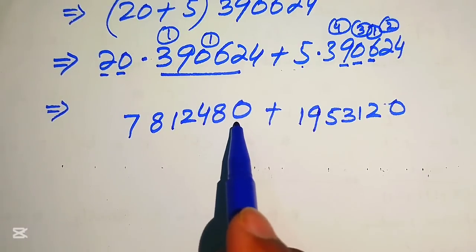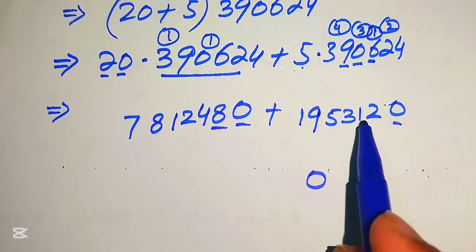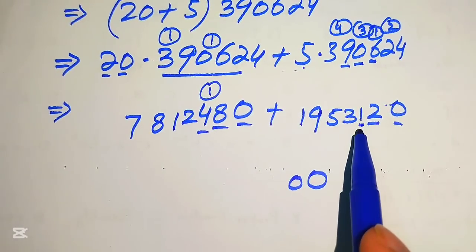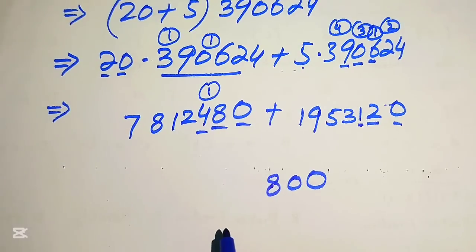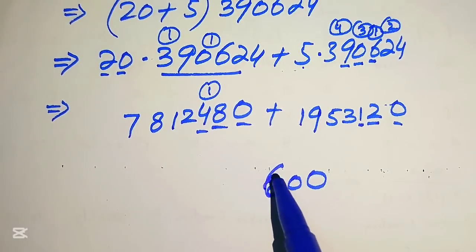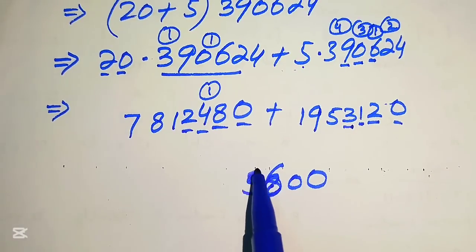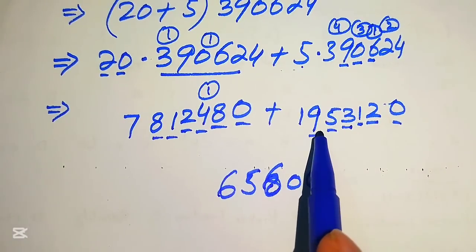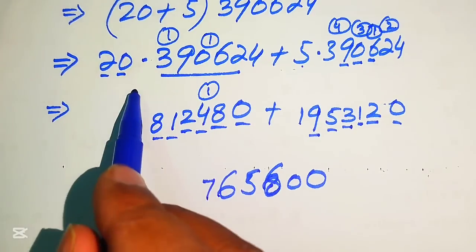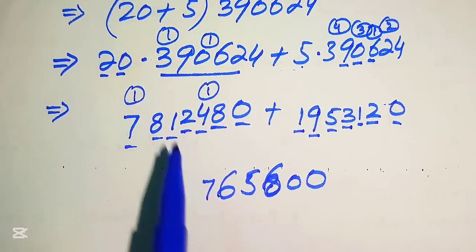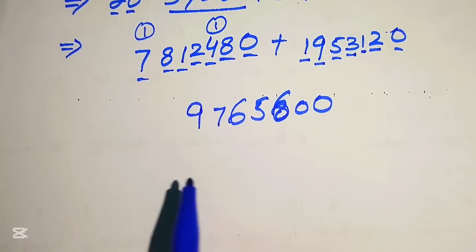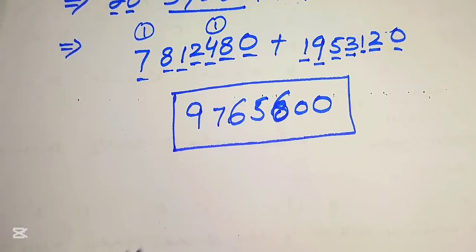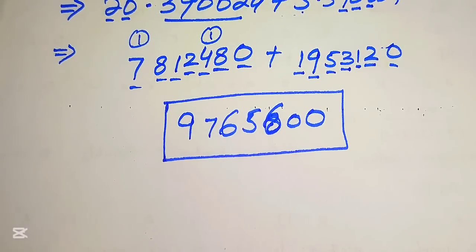Finally, we add the two values: 0 plus 0 is 0; 8 plus 2 is 10, write 0 carry 1; 4 plus 1 plus 1 is 6; 2 plus 3 is 5; 1 plus 5 is 6; 8 plus 9 is 17, write 7 carry 1; 7 plus 1 is 8; 8 plus 1 is 9. The final answer is 9,765,600. Thank you so much for watching this video, please subscribe to my channel for more exciting videos.